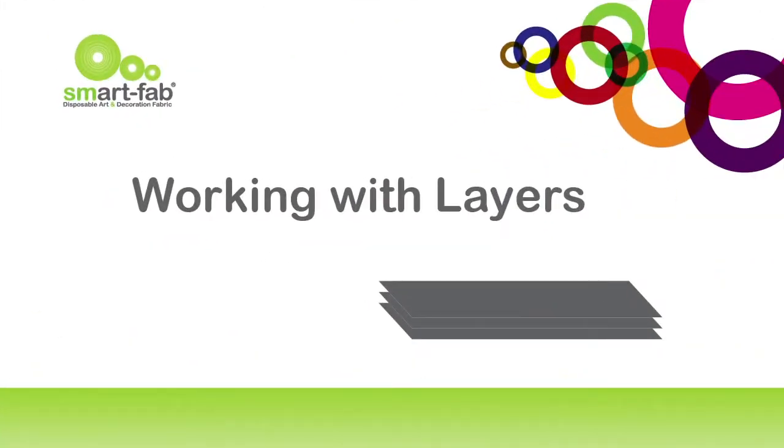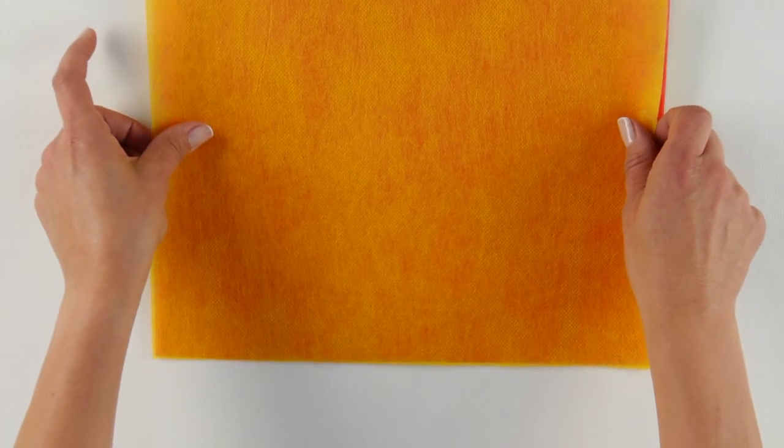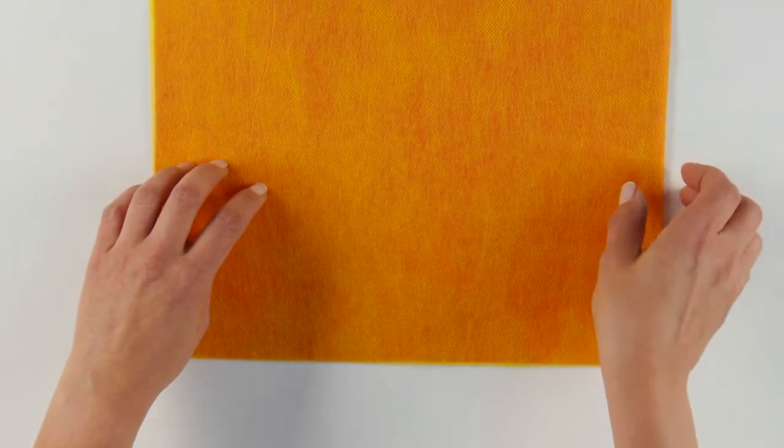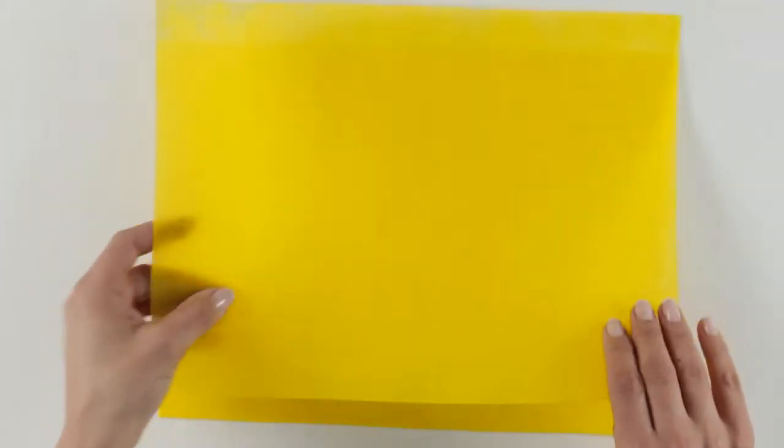Working with layers. Let's say you want to make orange. Just place a layer of yellow SmartFab over a layer of red, and you'll have orange. If you want to make a color more vivid, just use two layers of the same color SmartFab.